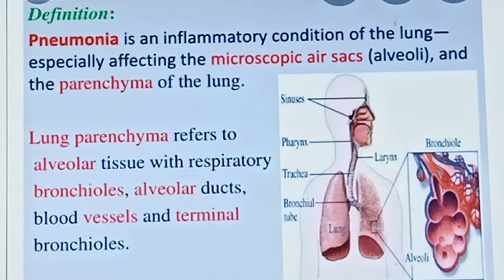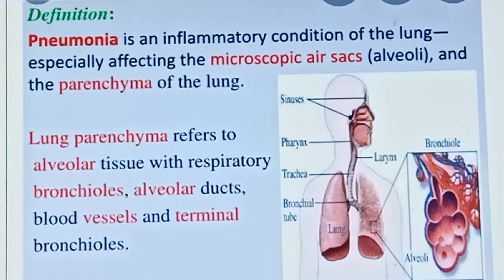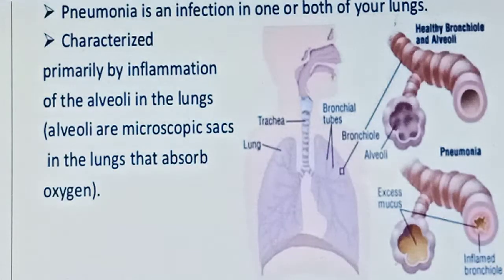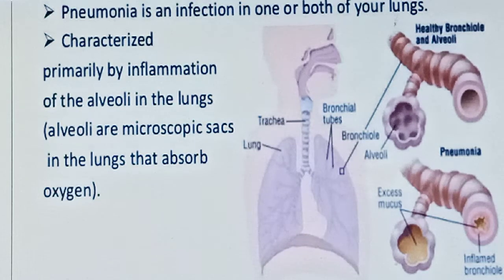The parenchyma of lungs refers to alveolar tissue with respiratory bronchioles, alveolar ducts, blood vessels, and terminal bronchioles. Pneumonia is an infection in one or both of your lungs — sometimes one lung is affected, but sometimes the inflammation is severe and it reaches both lungs. It is characterized primarily by inflammation of alveoli in the lungs.